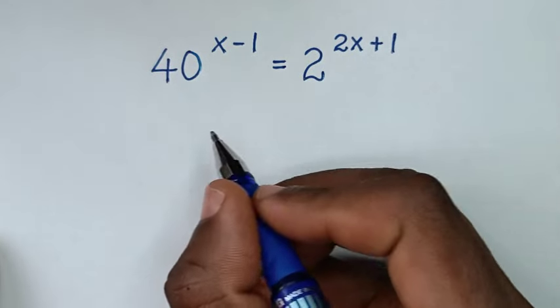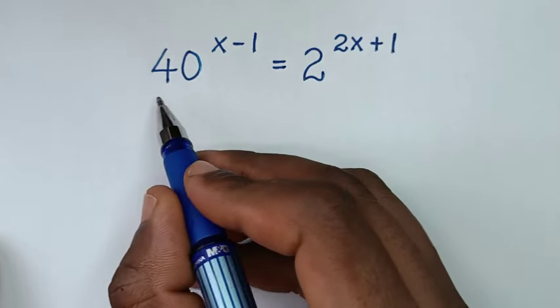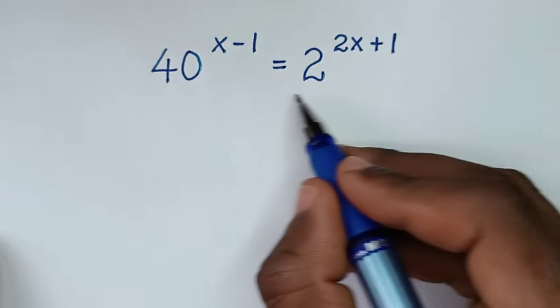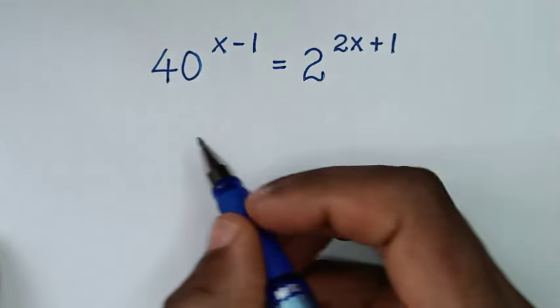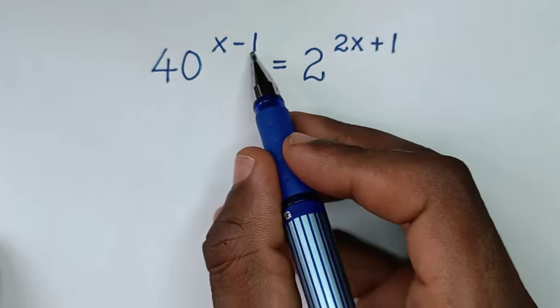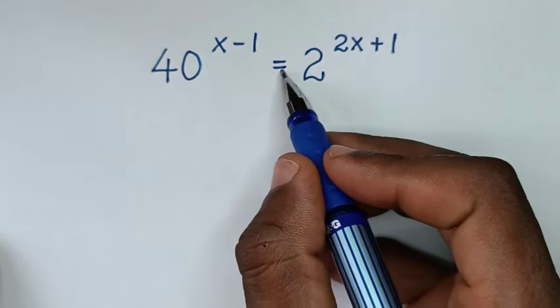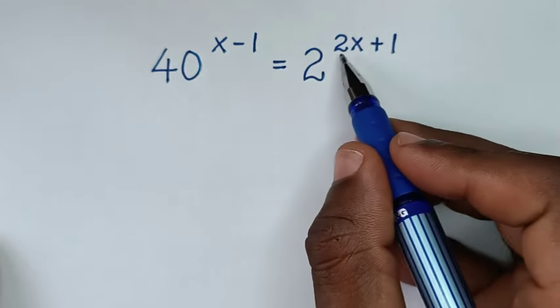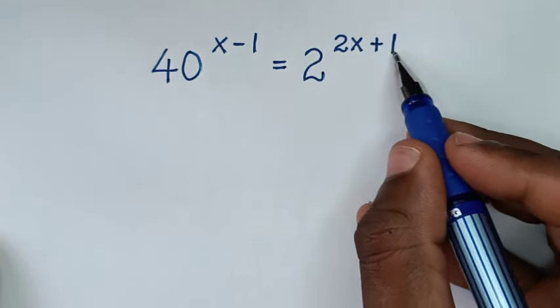Hello, you are welcome to solve this math problem, which is 40 power of x minus 1 is equal to 2 power of 2x plus 1.